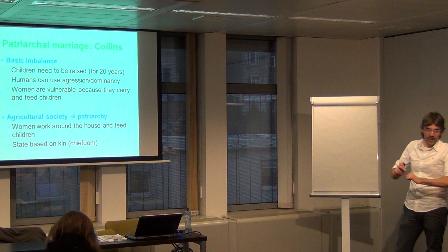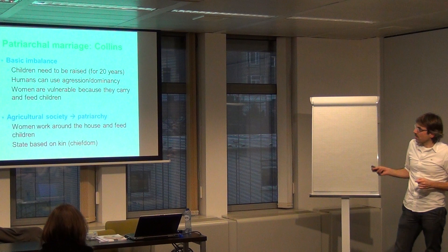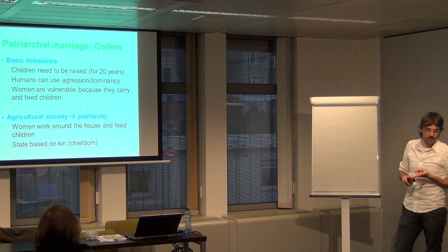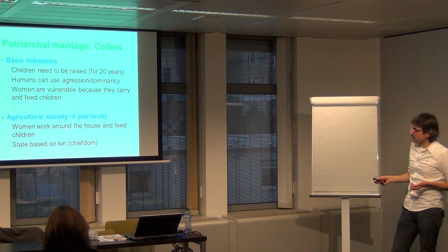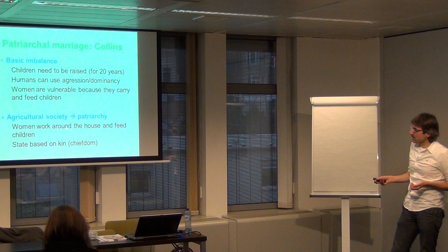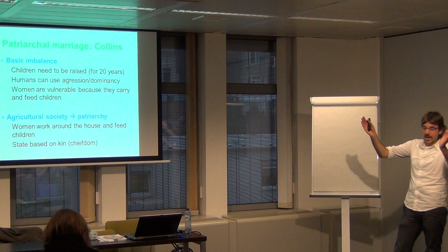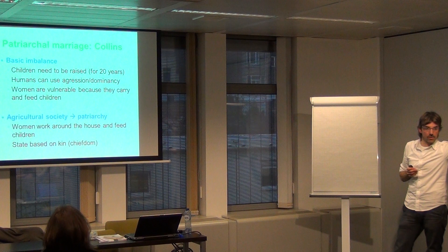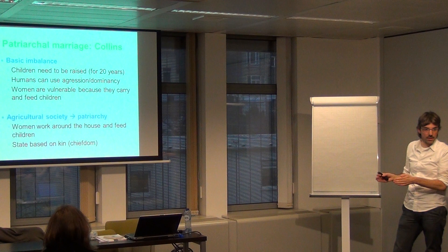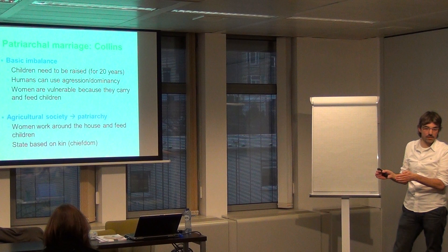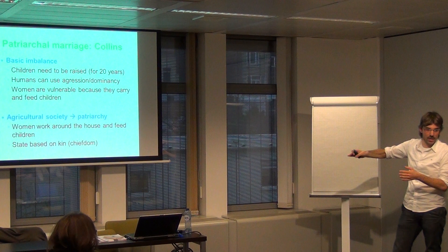Second, we are aggressive — we can be aggressive. We dominate, or we try to dominate. Humans can do it. Third, women are vulnerable because they carry and feed children. If there is no milk formula, breastfeeding might be important. Women might have to do that. In an agricultural society, the imbalance for women is at its peak. Why? Men go, say, two kilometers — a further way to work on their fields, or even further away. Somebody has to keep track of the children. States are typically based on kin — tribes, chiefdoms, states.